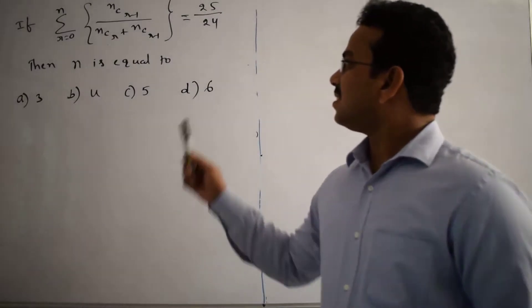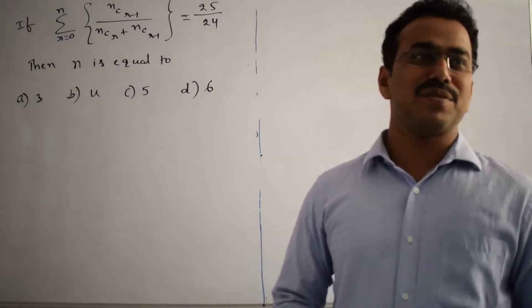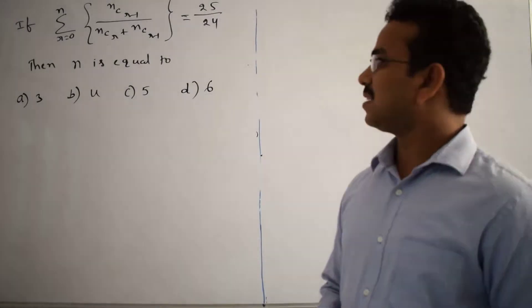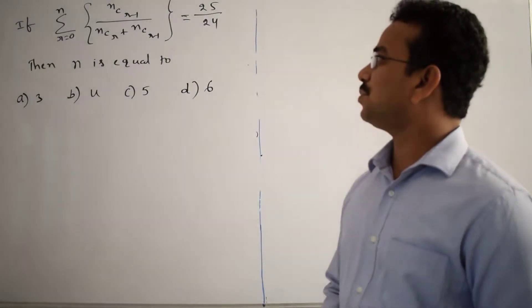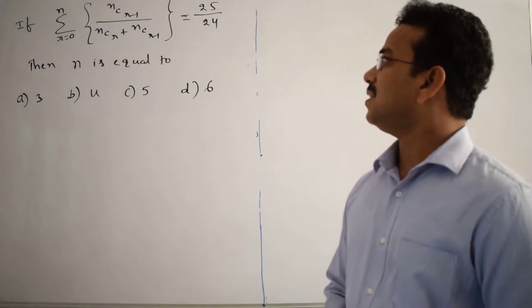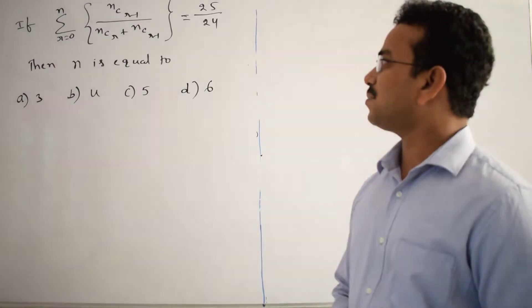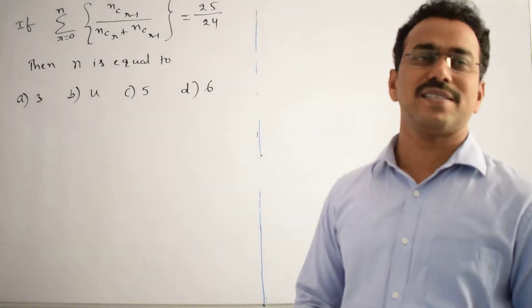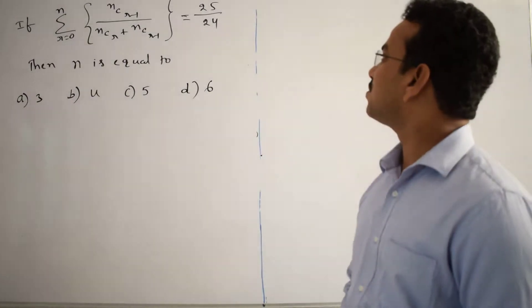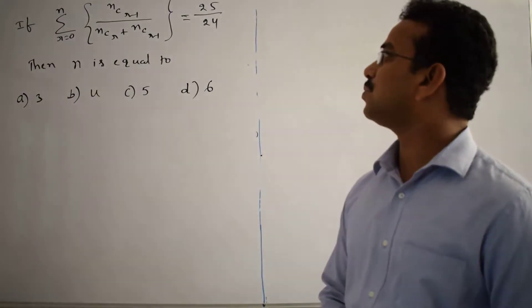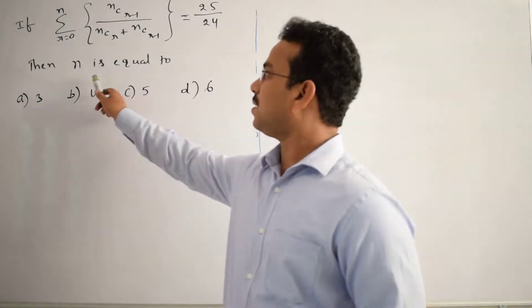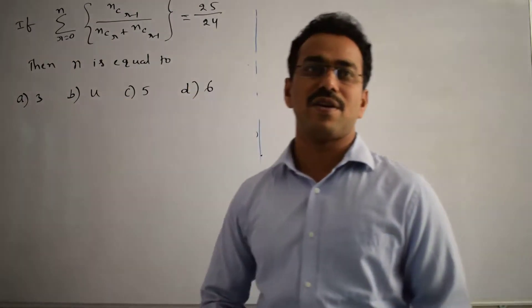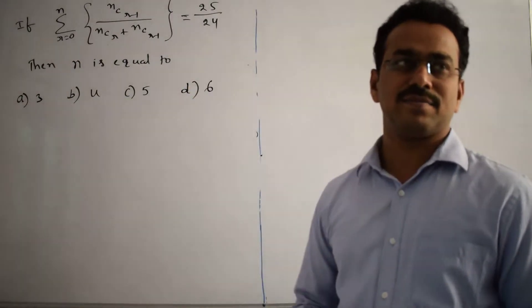Let's discuss the solution of the given question. If summation R equals 0 to N of NCR-1 divided by (NCR + NCR-1), all cubed, equals 25 by 24, then find the value of N.